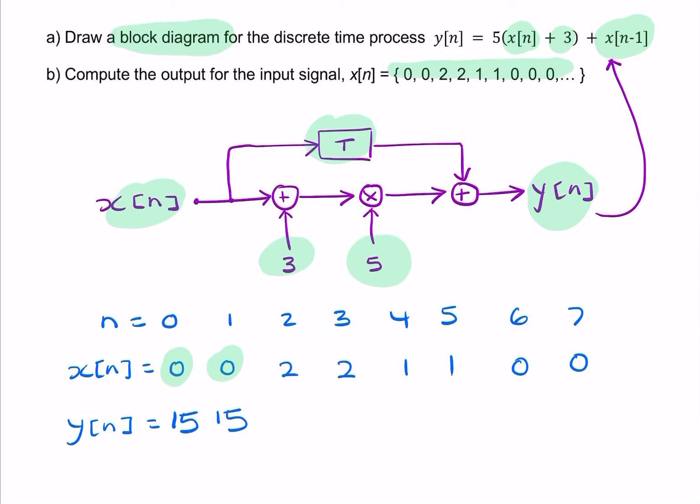Now it changes when n equals 2, because x is now equal to 2. So now we have 2 plus 3 is 5, 5 times 5 is 25. We add to that the previous value of x. The previous value of x in this case is 0. So we're adding 0 to 25, and the answer will simply be 25.